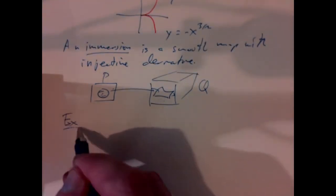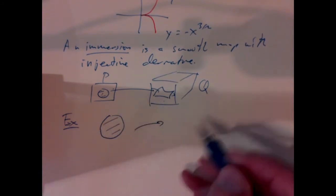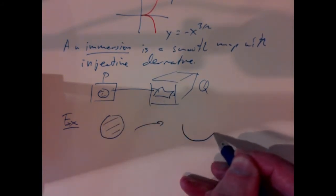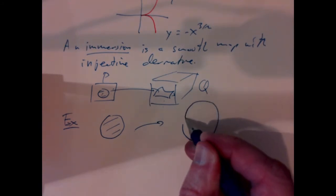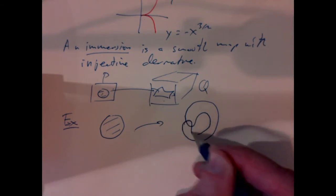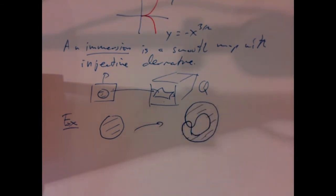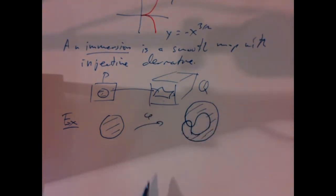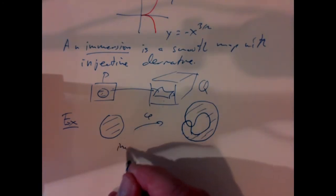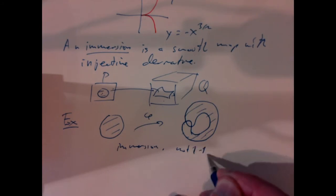There's another problem that's more or less obvious in the picture. We could have a map that takes the open disk in the plane and maps it so that it actually wraps around itself and touches itself, overlapping. Explicit formulas for such maps are not that difficult to come up with. Such a map would be an immersion, but not one-to-one — not injective.